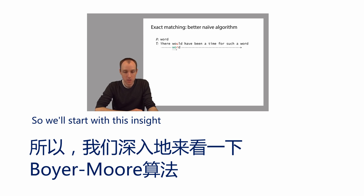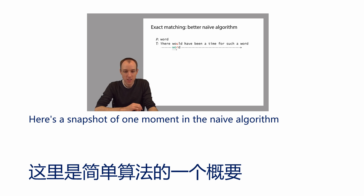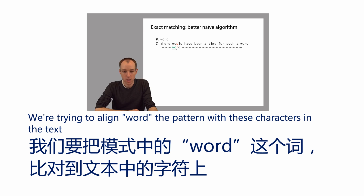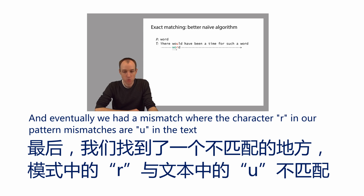So we'll start with this insight. Here's a snapshot of one moment in the naive algorithm. We're trying to align the word as the pattern with these characters in the text, and eventually we hit a mismatch where the character R in our pattern mismatches a U in the text.